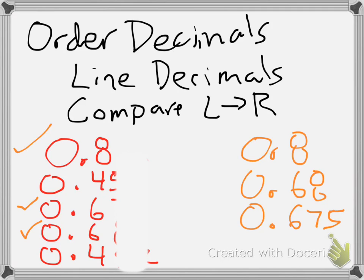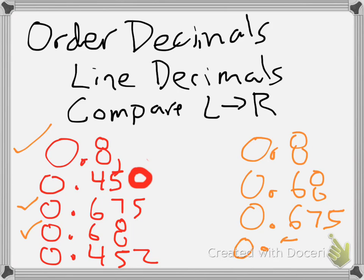The ones I have left both have 4s next to them, and both have 5s next to them, so I need to move to the very last space. Now I'm looking at a 2 and a blank space, which is represented by a 0. I know that 2 is bigger than 0, so I use 0.452 next, and then 0.45. And now I've put those numbers in order from greatest to least. Make sure you're writing down the entire number, not just the one digit.